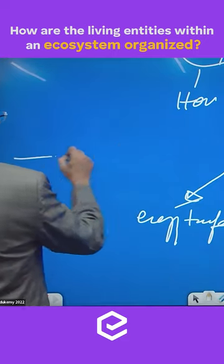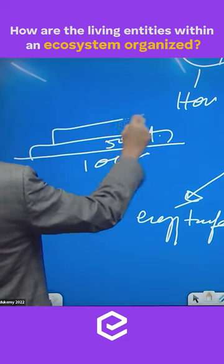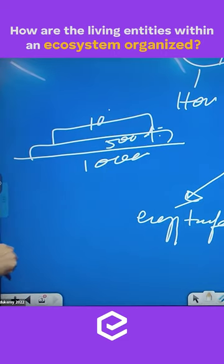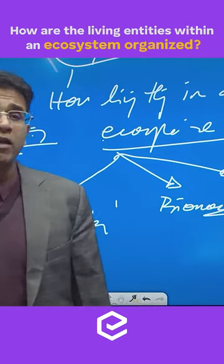So there are 1000 units of grasses. They support maybe 500 deers. This supports probably 10 tigers. So when I talk in terms of population, the number of organisms, we call this the population pyramid.